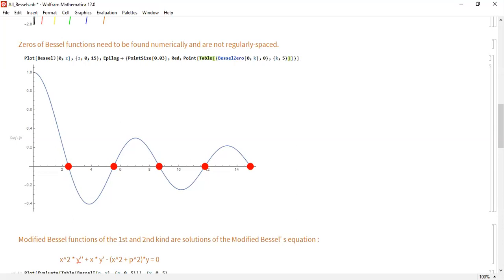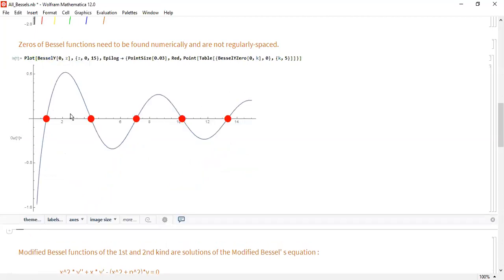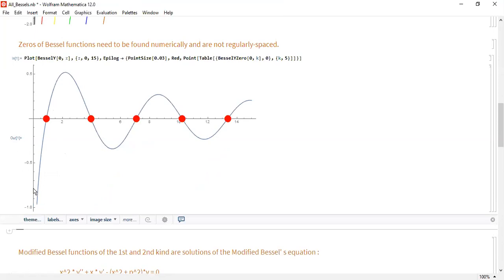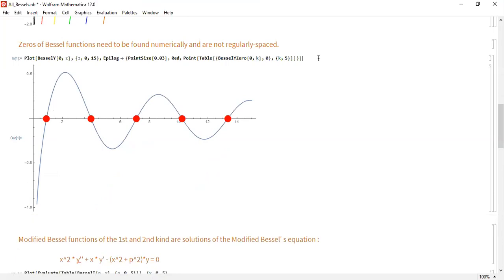They do not have regularly spaced and easy to find zeros, so you have to do that numerically. This is J_zero. I'm plotting J_zero, and then I'm finding and plotting the zeros. I would do that with this command in Mathematica. And if I want to do that for the Neumann functions, I would just change the J's to Y's. That should plot the first Neumann function and find its zeros.